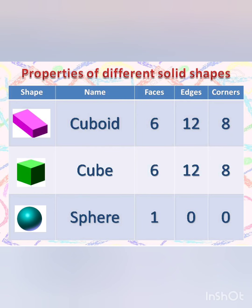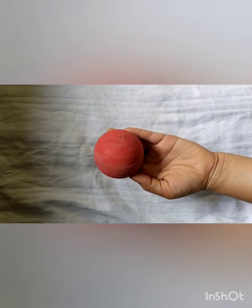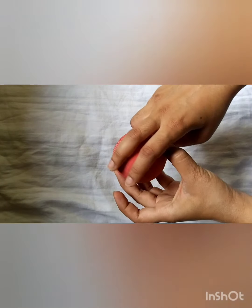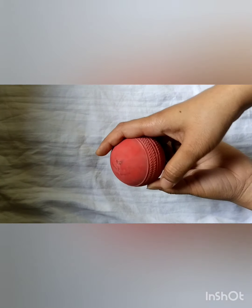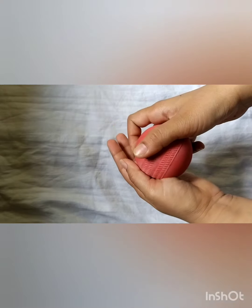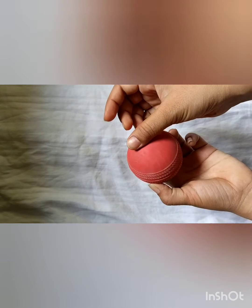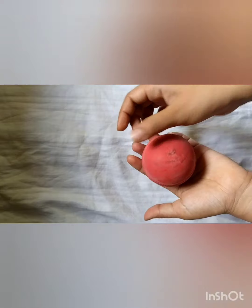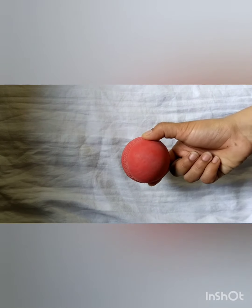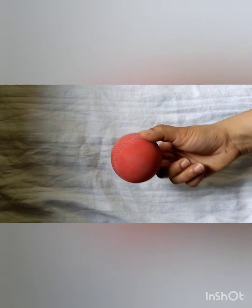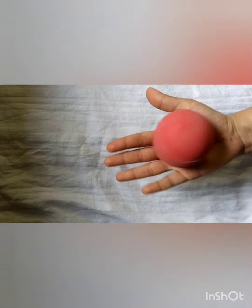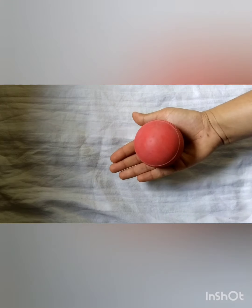Now let's look at the third shape, which is sphere. A sphere has one face, zero edges, and zero corners. A ball is an example of a sphere. As you can see, it has only one face. As you slide your hand on the ball, you will not find any edge. So it has zero edges and zero corners. A sphere has only one face.